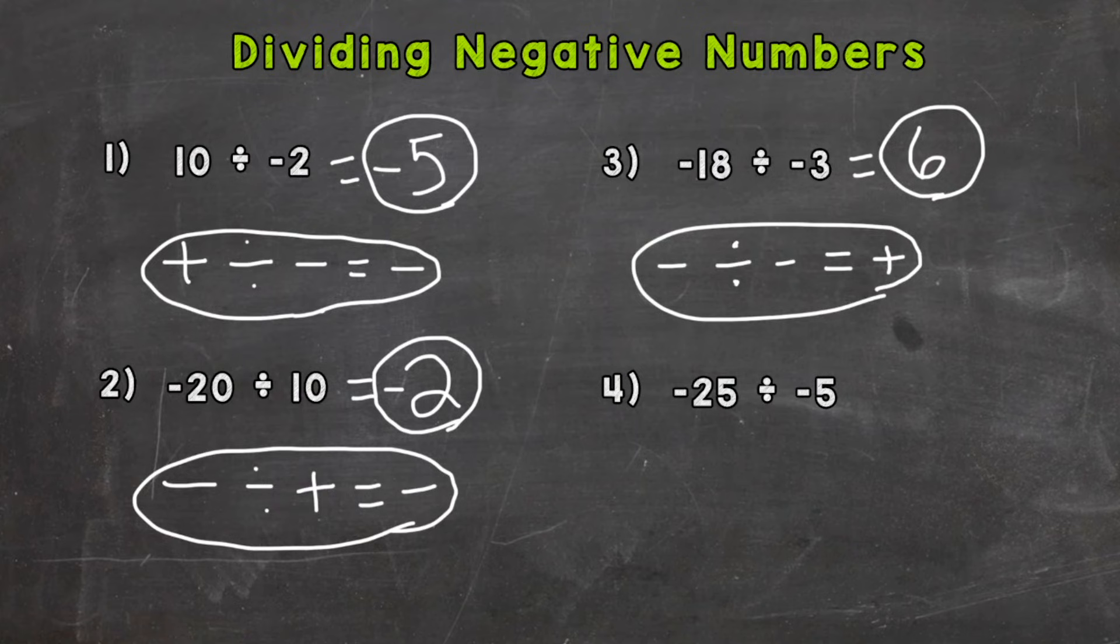Number 4, negative 25, a negative divided by a negative again gives us a positive. So 25 divided by 5 is 5. Think of it as negative 25 divided by negative 5 gives us that positive answer of 5.